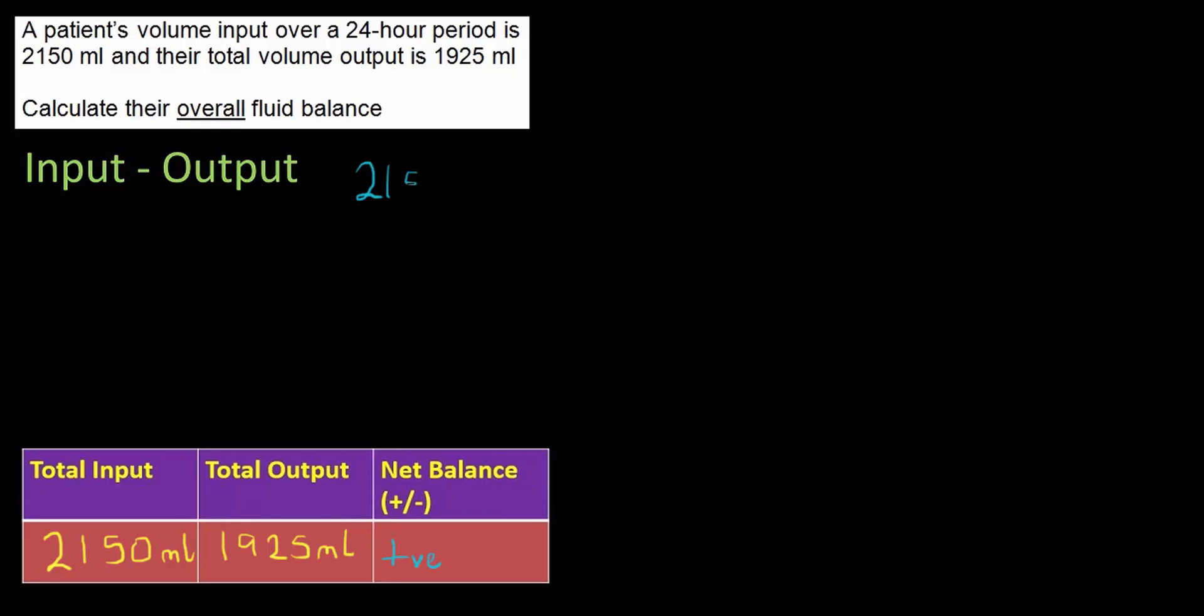Larger number on top 2,150. Take away 1,925. Slightly trickier question. Zero take away 5 doesn't go. So I'd have to borrow from that 5 there to leave 4 and the one I borrowed becomes there. So 10 take away 5 is 5. 4 take away 2 is 2. 1 take away 9 doesn't go. So I borrowed from the 2 to leave 1 and the one I borrowed makes that 1 there become 11. 11 take 9 is 2 and the 1 take 1 is 0 or I've just decided to leave it as blank. So my final answer is positive 225 millilitres.